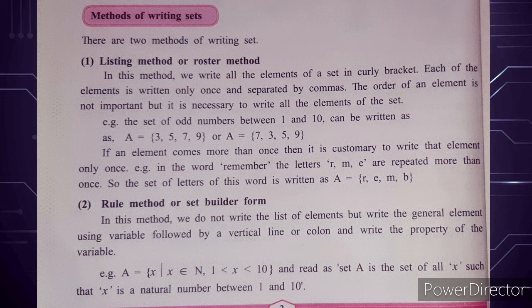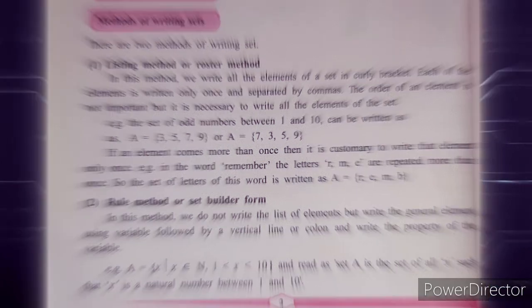The answer would be all natural numbers between 1 and 10, which gives us {2, 3, 4, 5, 6, 7, 8, 9}. Just like coding, the rule method is written in curly brackets and then the final answer is found.